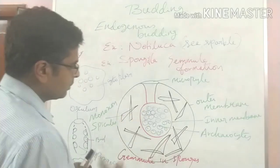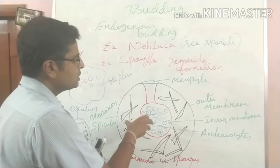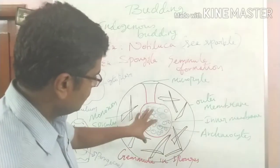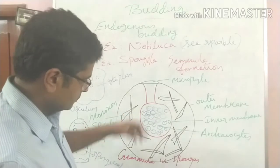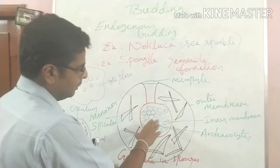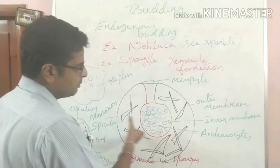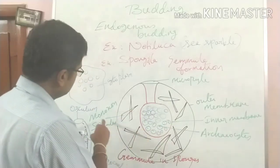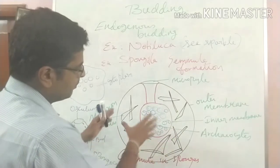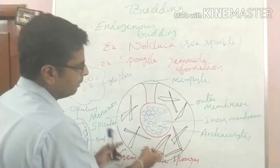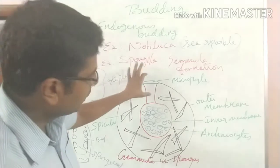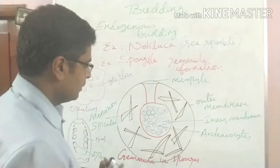In the structure of a gemmule, at the center there is a mass of food-laden cells called archaeocytes, surrounded by an inner membrane. Next to the inner membrane there is a gelatinous material supported by monoclonal spicules. The whole bud is covered by an outer membrane, and on one side there is a micropyle opening.